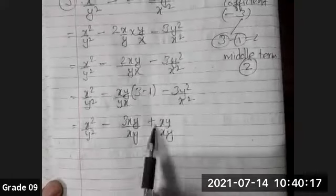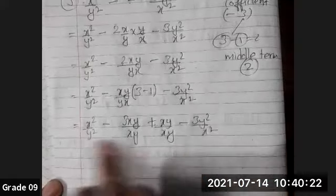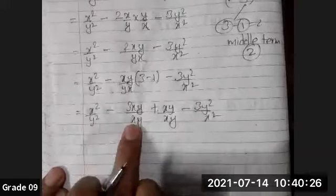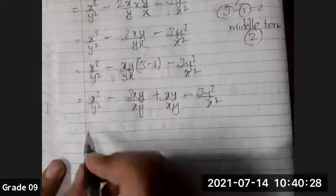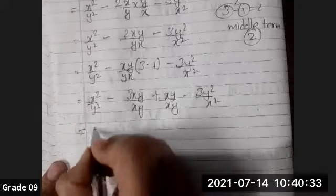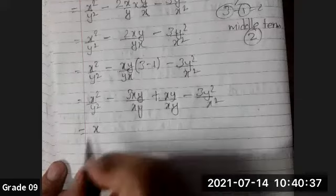And here minus 3y²/x². Now the rest is all about taking common: numerator common, denominator common. Follow that rule and you'll understand it more easily. Out of x² and -3xy, what is common? x is common. Similarly, in the denominator, out of y² and xy, what is the lowest? y is the lowest, so I'm taking y common.